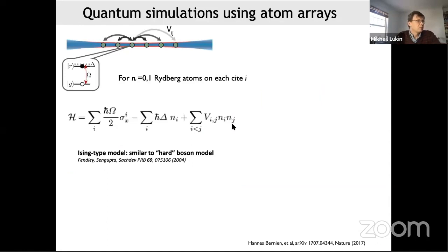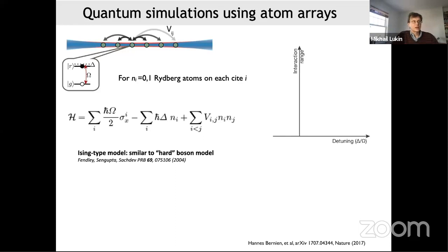As an example: we employed the system for quantum simulations of spin models. We prepare a string of atoms with equal separation and encode qubits in the ground and Rydberg states — two-state system — and write an effective spin Hamiltonian. To understand what's going on, we characterize it using the ground-state phase diagram.